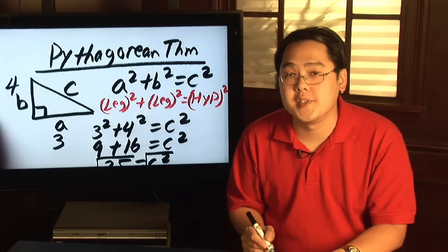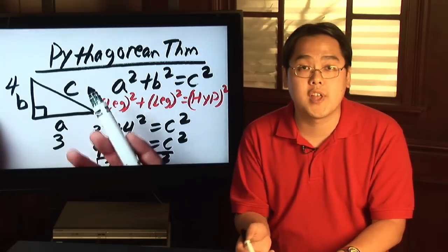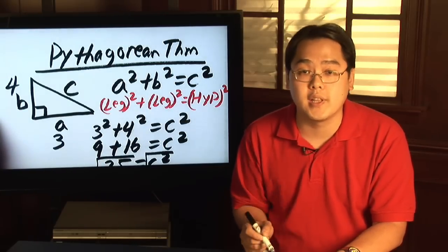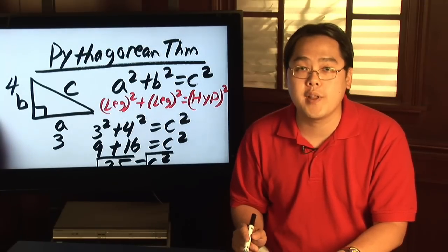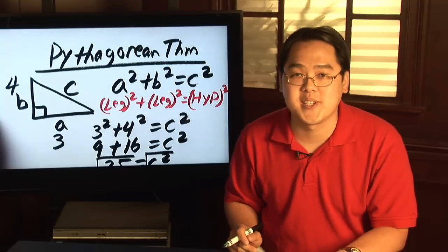So 5 is the missing hypotenuse. If you were given the hypotenuse and wanted to solve for one of the legs instead, just plug into the Pythagorean Theorem and as long as you plug in your numbers correctly you will find the missing side.